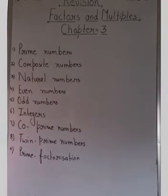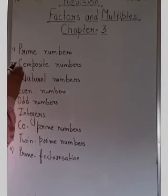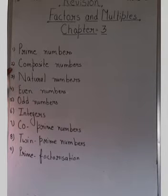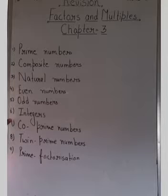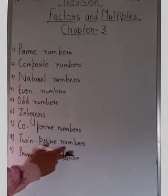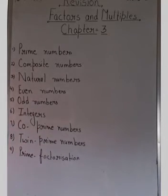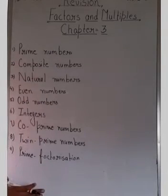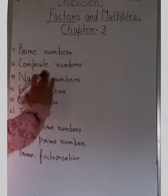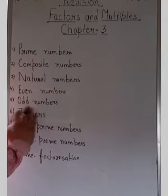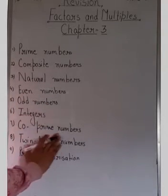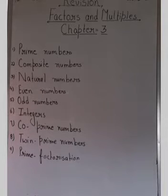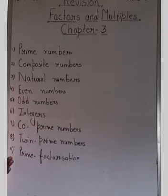Class 5, we are starting revision of chapter number three — Factors and Multiples. In this chapter you must study: prime numbers, composite numbers, natural numbers, even numbers, odd numbers, integers, co-prime numbers, twin prime numbers, and how to find prime factorization. These topics are very important. I have explained all of this in my previous videos, so you can go and watch those.